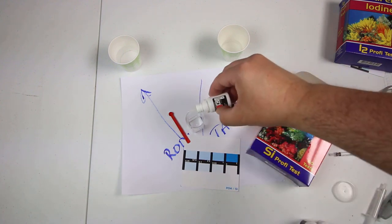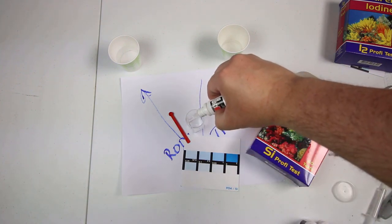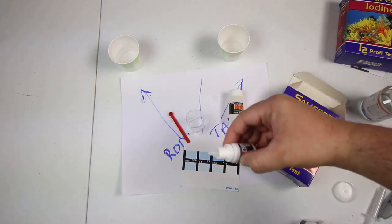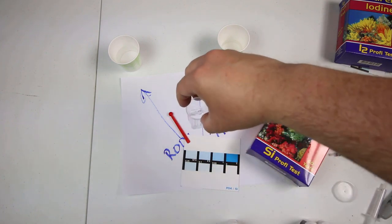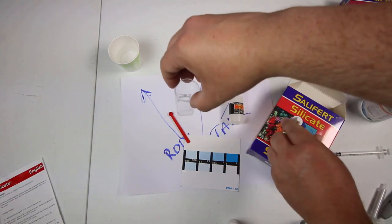So let's put in our four drops. I'm going to swirl for ten seconds and then let it stand for a minute.